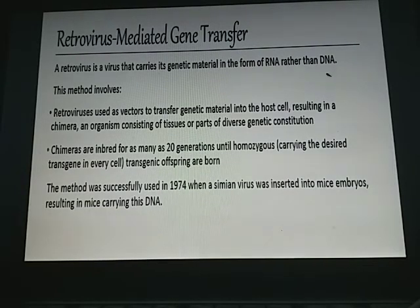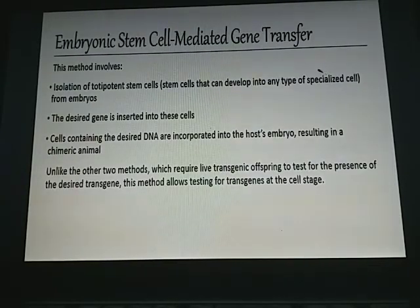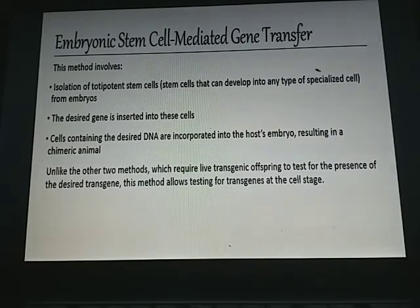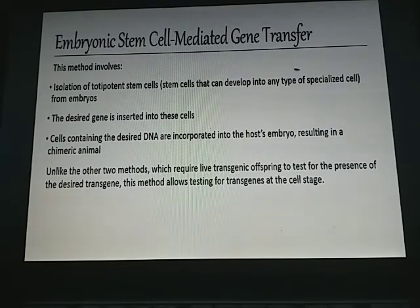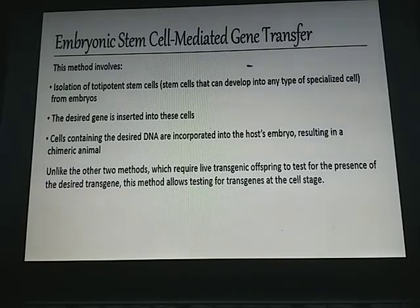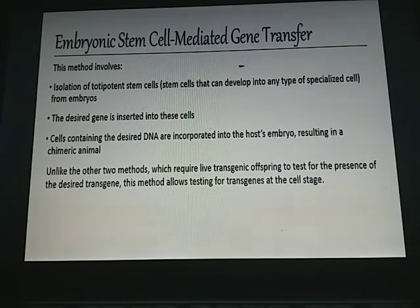In embryonic stem cell-mediated gene transfer, totipotent stem cells are isolated from embryos, the desired gene is inserted into these cells, and cells containing the desired DNA are incorporated into the host embryo, resulting in a chimera animal. Unlike the other two methods, this approach allows testing for transgenes at the cell stage rather than requiring live transgenic offsprings.